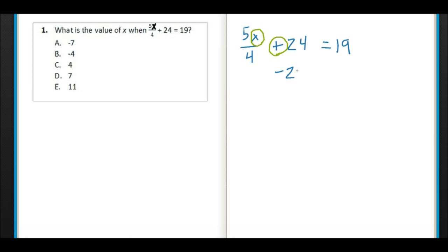We'll start by subtracting 24 from each side. That gives us 5X over 4 on this side because we've gotten rid of that 24 completely, and then if we take 19 minus 24 we get negative 5.